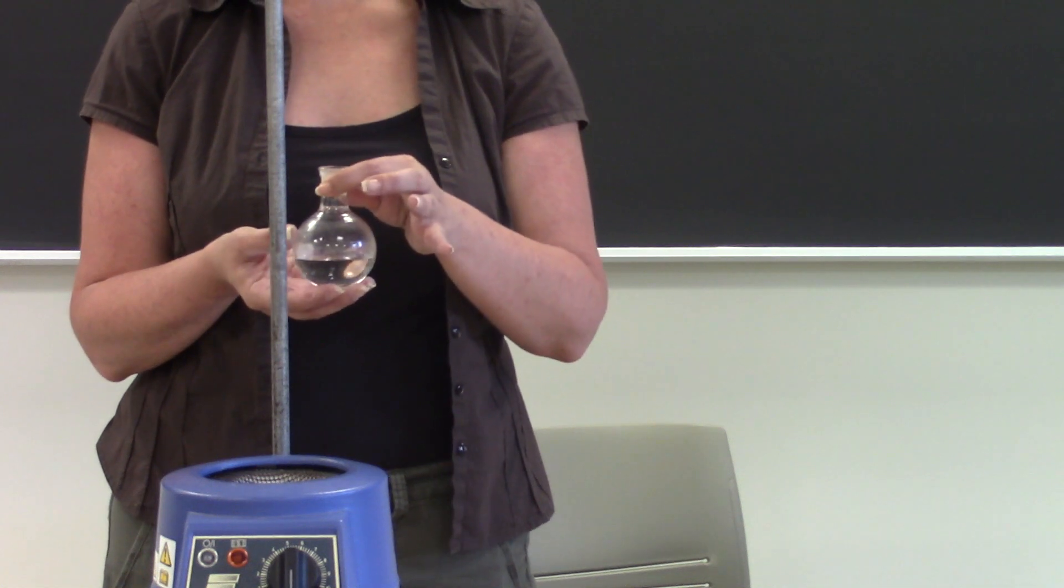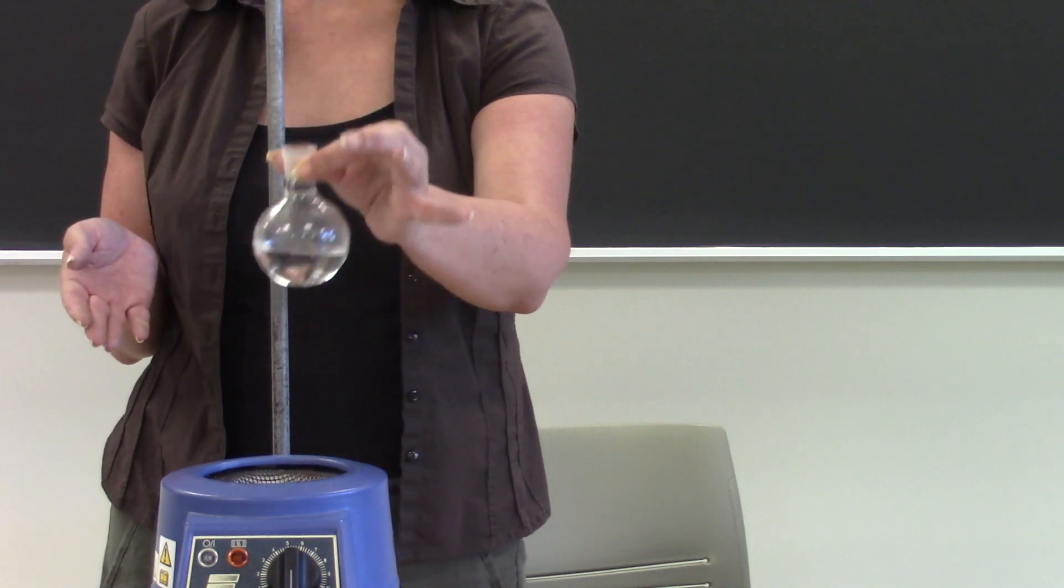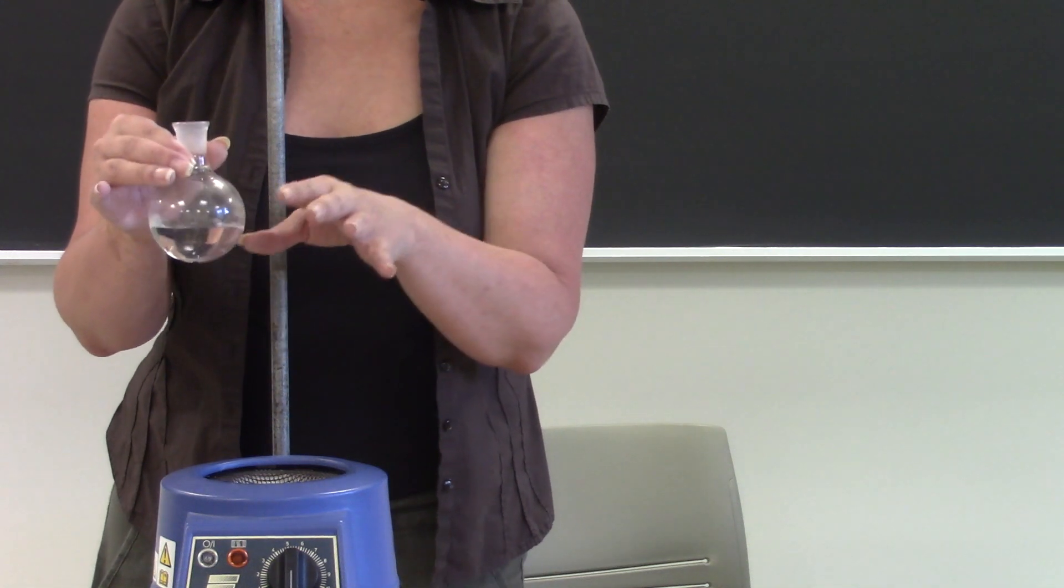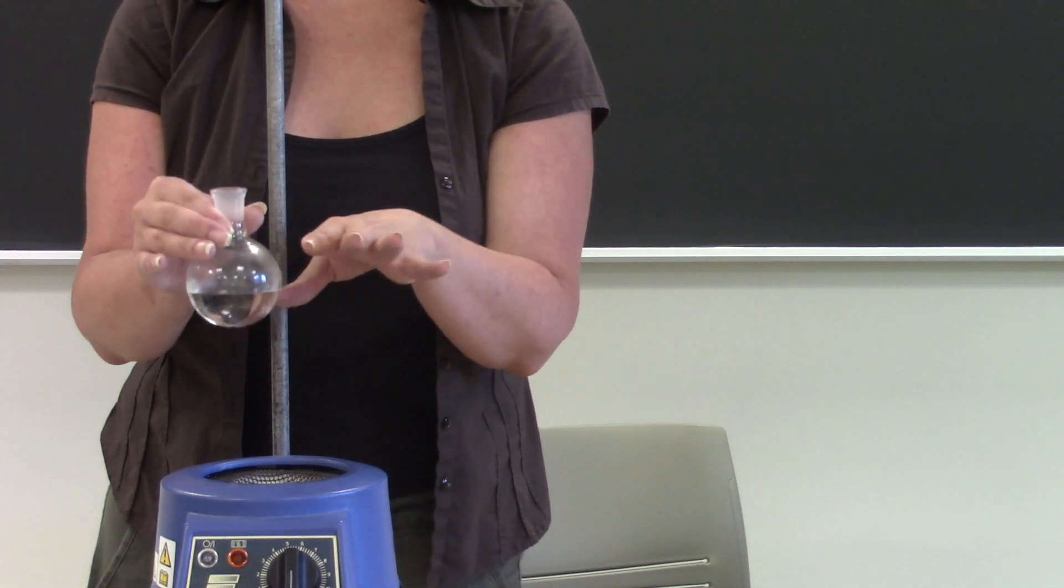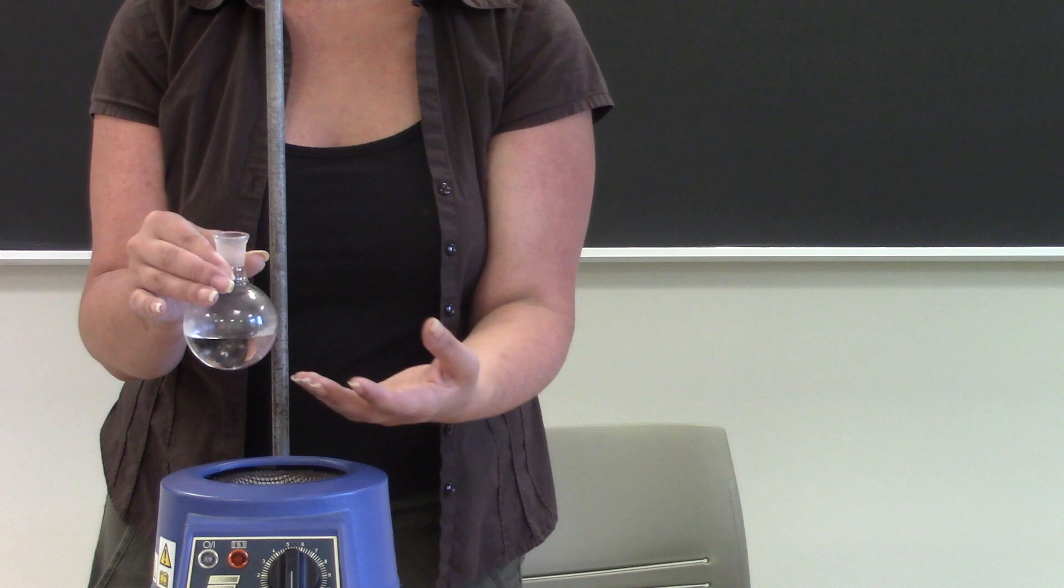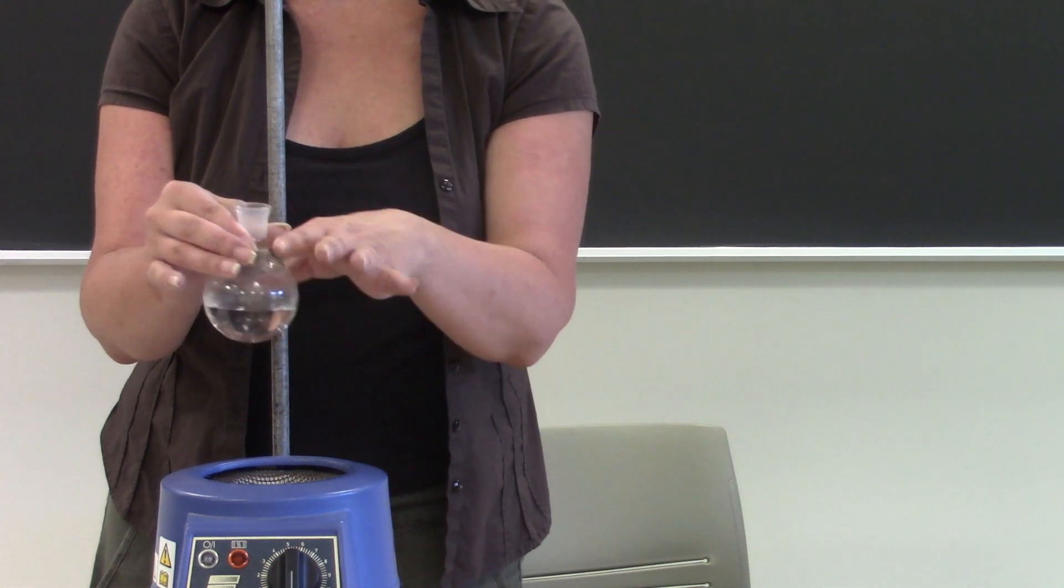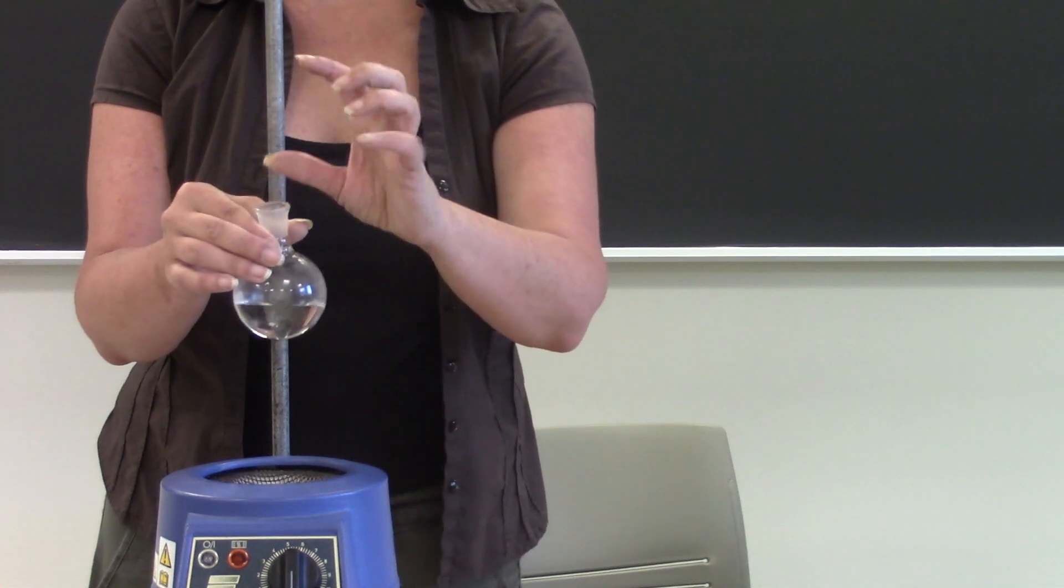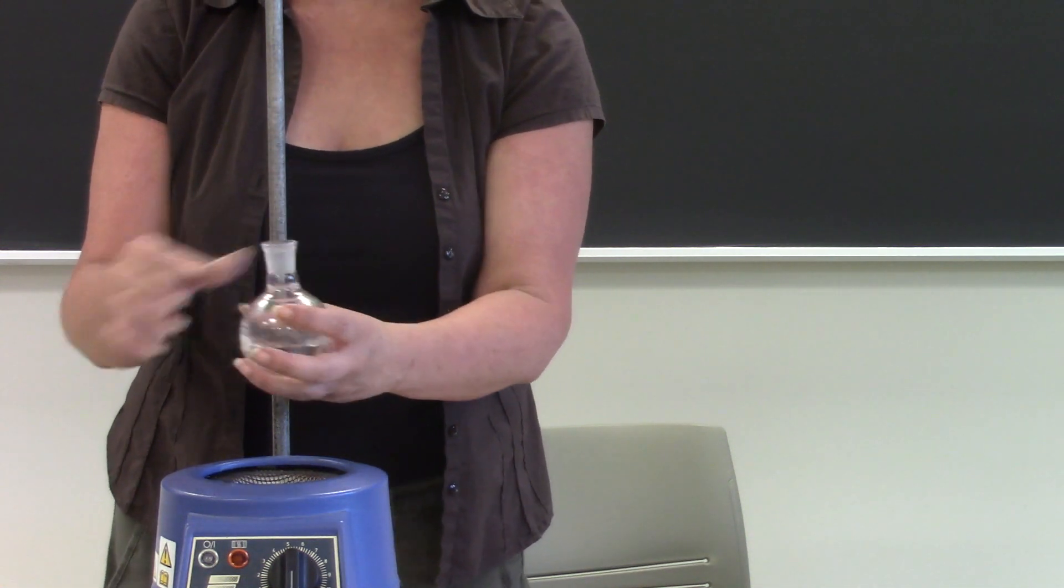So the first thing that you're going to put on is your round bottom flask. Make sure when you're using a round bottom flask for a distillation you never fill the flask more than half full that way when it does boil the bubbles are going to be contained inside here. We don't want anything to gas to be above the round bottom flask.